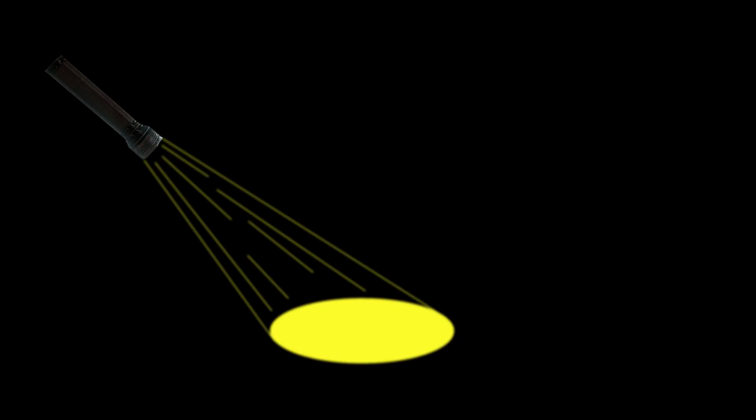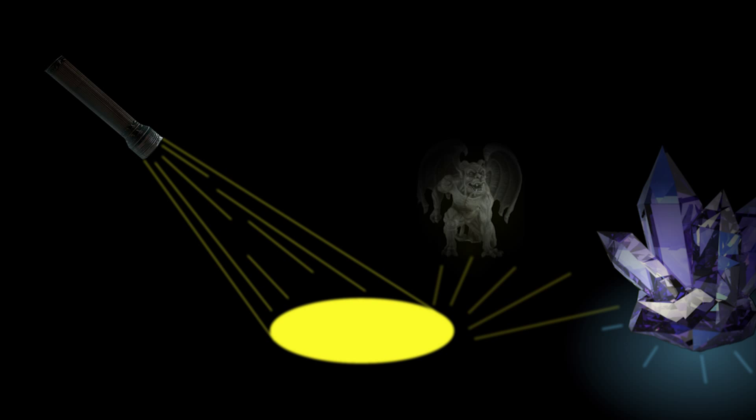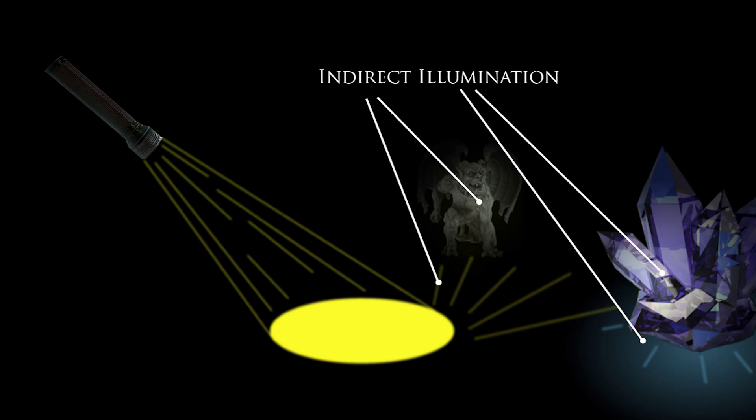As these laughably crude slides — obviously made by a highly bothered software engineer with, quote, "way better things to do right now" — demonstrate: in the virtual world of video games, light doesn't behave exactly as it would in reality. In the real world, light will bounce off of a surface and some will bounce directly to your eye. This is a phenomenon known as direct illumination. However, most of the light bouncing off of a surface will proceed to bounce around an environment many many times before hitting your eye, illuminating and coloring each surface it touches as it goes. This is what's known as indirect illumination.